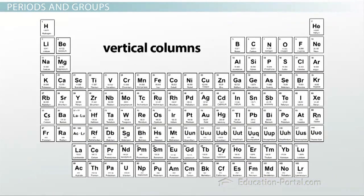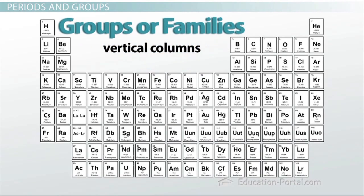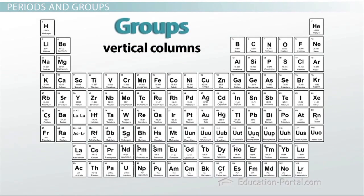The vertical columns on the periodic table are called groups or families. Groups probably come in most handy when predicting the properties of an element. Just like people in a family all may share similar traits, elements in the same group on a periodic table also will have similar properties. The groups are numbered from 1 to 18, from left to right.